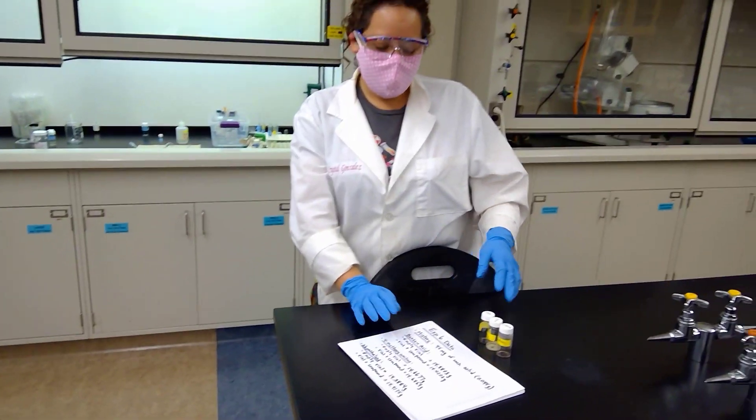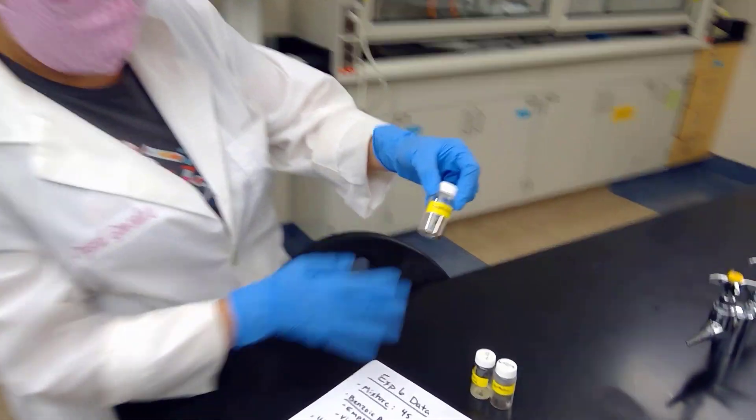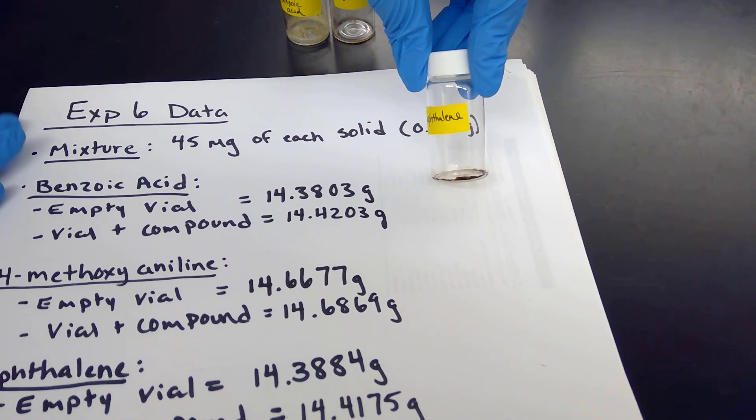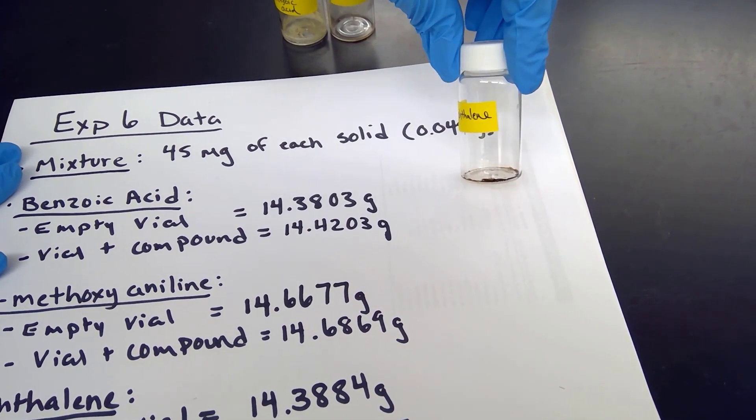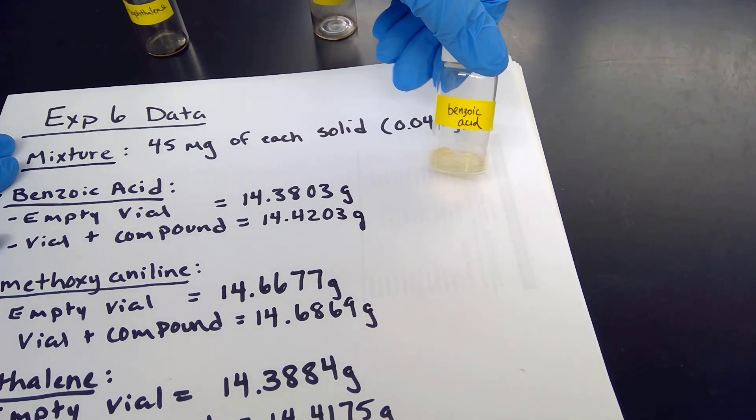Students, we have our samples here. We have evaporated all three samples, and I just want to show you what they look like. So I'm going to go ahead and place them on top of this white sheet of paper here. And so if you see, our naphthalene here is somewhat of a dark solid. And then we have our benzoic acid, which is a whitish solid.